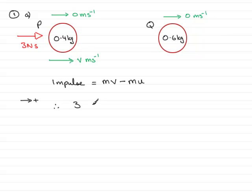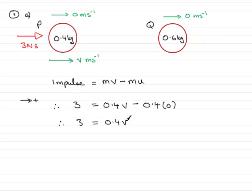So: 3 equals the mass, which is 0.4, times the final velocity V, minus 0.4 times the initial velocity, which was 0. Clearly, 3 equals 0.4V, because that last term is simply 0. Therefore, the final velocity of P is 3 divided by 0.4, which gives 7.5 meters per second moving to the right.